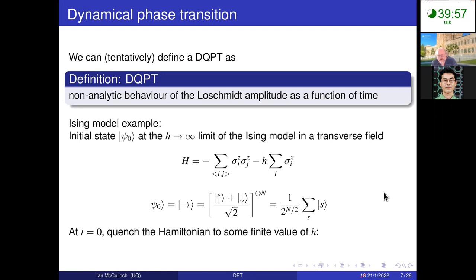We can now define — somewhat tentatively — a dynamical quantum phase transition as some kind of non-analytic behavior of this rate function as a function of time. What we have is a phase transition where time serves as our control parameter. As we evolve the system in time following a quench of the Hamiltonian parameter, we look for non-analytic behavior in our rate function as the time variable increases.